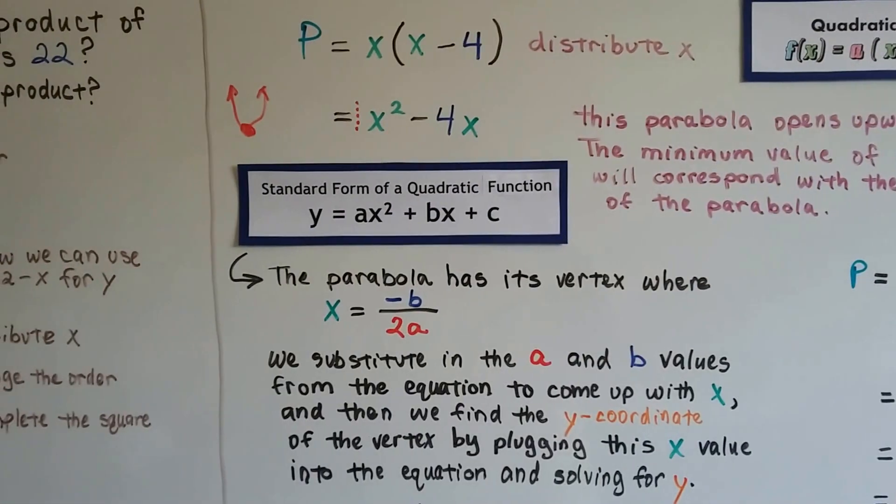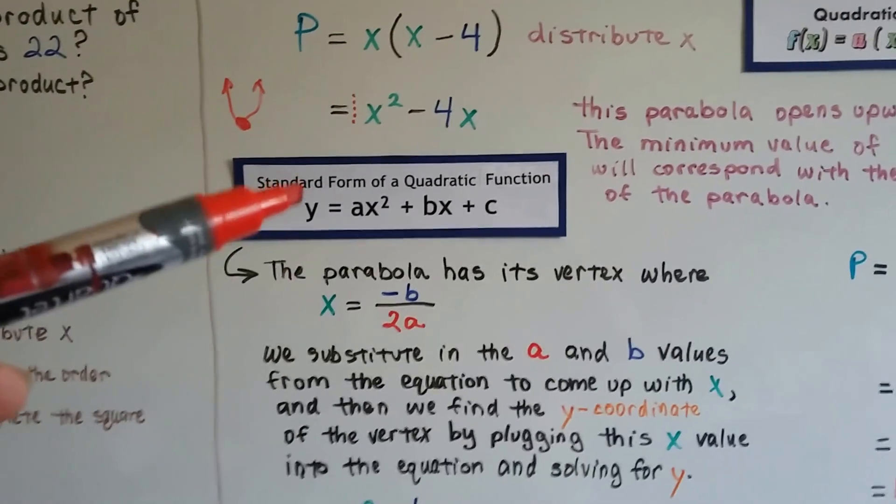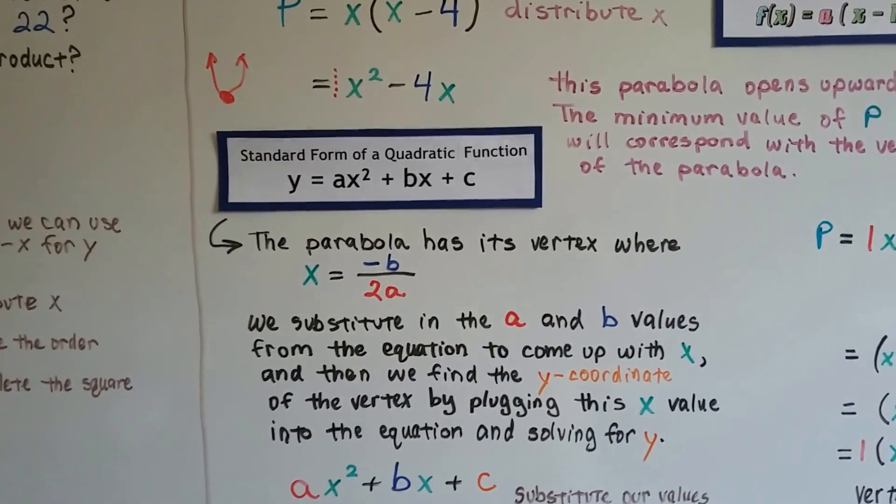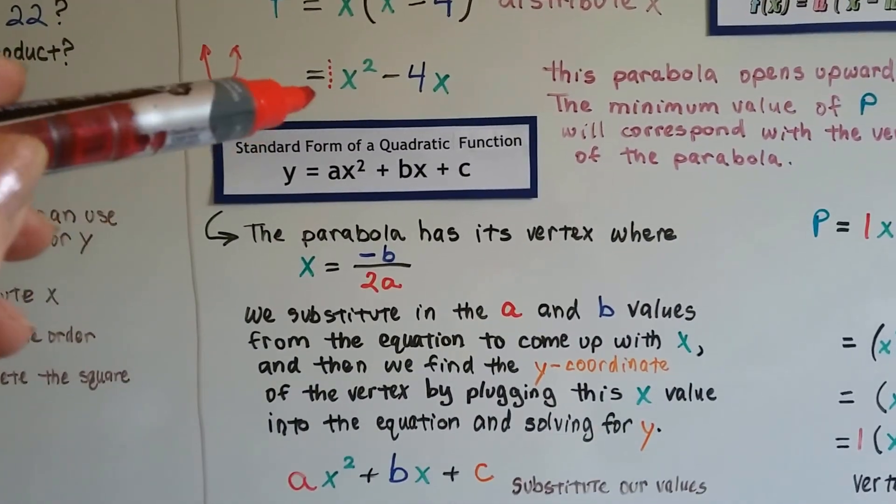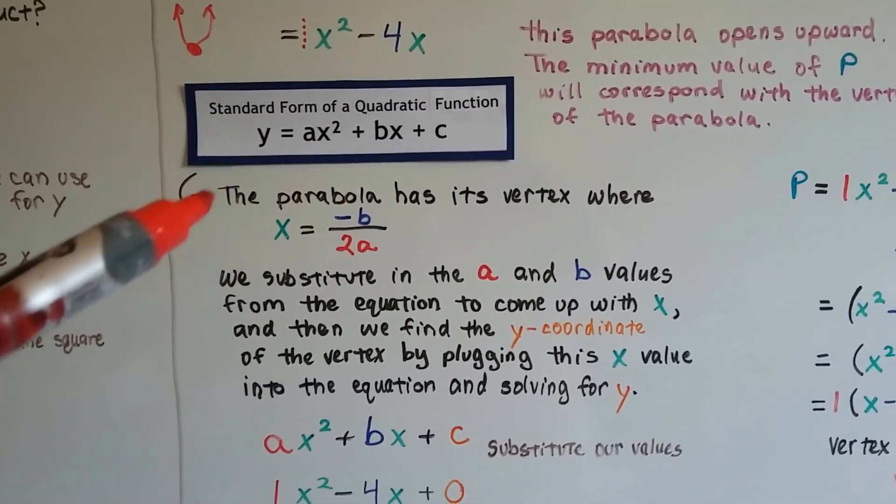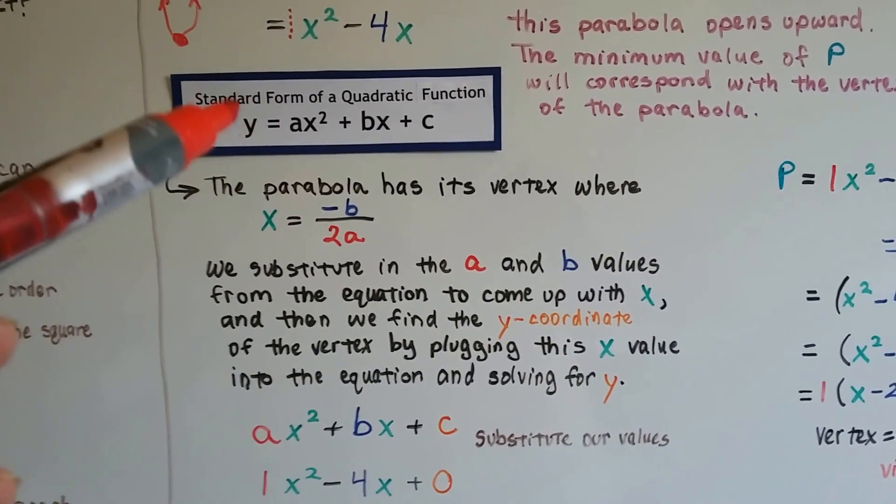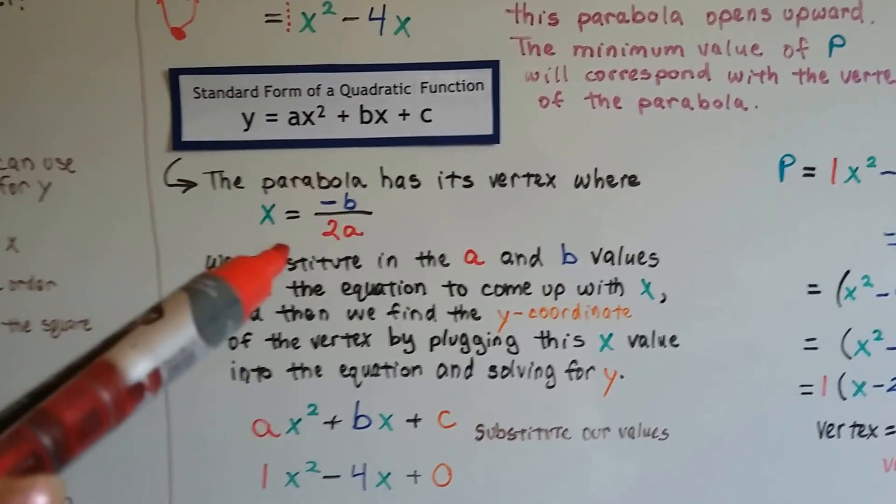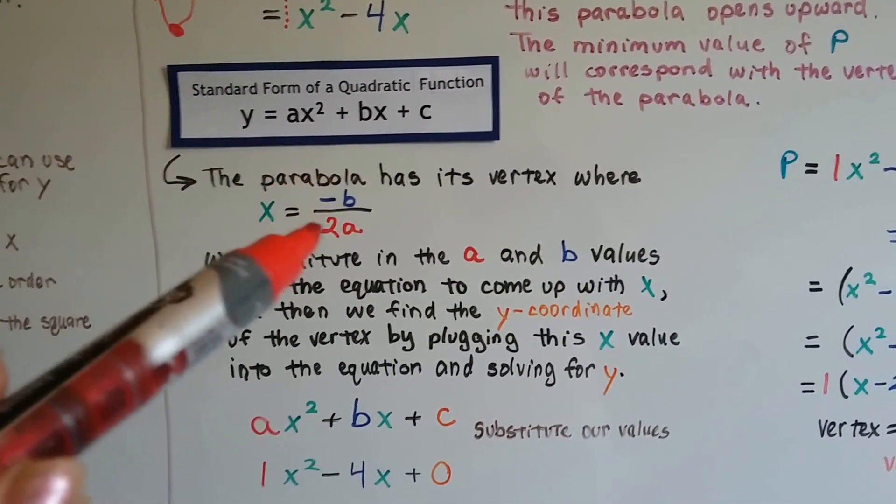We know the standard form of a quadratic function is y = ax² + bx + c. If we've got 1x² - 4x, the parabola has its vertex where x equals the quotient of -b and 2a.